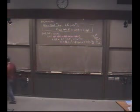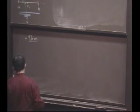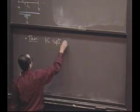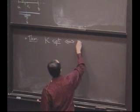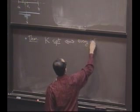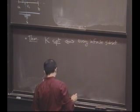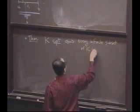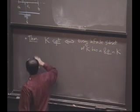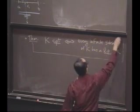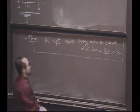Here's another characterization of compactness that is true in arbitrary metric spaces, unlike the other characterization, which is only true in R^n. K is compact if and only if every infinite subset of K has a limit point in K. So this is a crucial fact about compact sets.